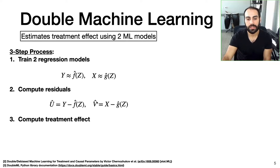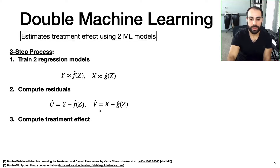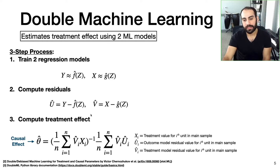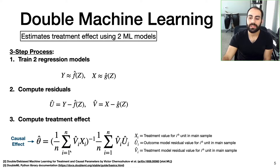The second step is we compute residuals — essentially the difference between the true value Y and the estimated value from F̂, and similarly the true value X and the estimated value from Ĝ. This gives us residual values U and V for each model respectively. Using these residuals, we can compute the treatment effect directly using this equation, which has three things: our residual value for the treatment model V, our residual value for the outcome model U, and our ground truth treatment values. I is indexing our samples and n is the number of records in our main sample.